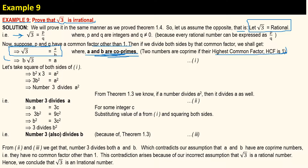Solving this, we get b times square root of 3 is equal to a — let's call this equation number 1. Squaring both sides of equation 1 gives us 3b² is equal to a², which implies that 3 divides a².